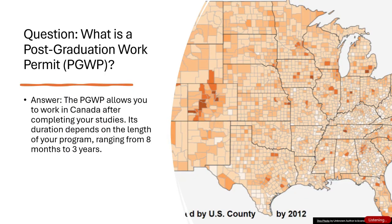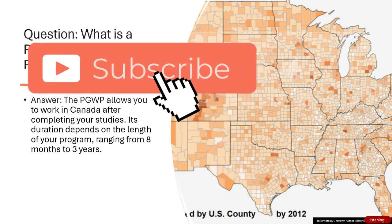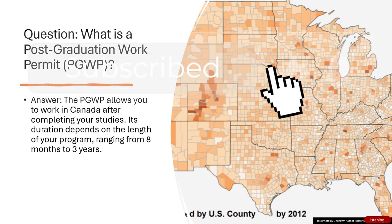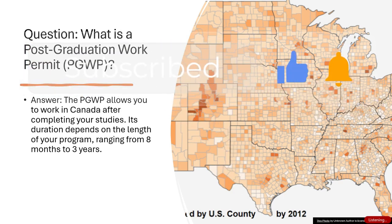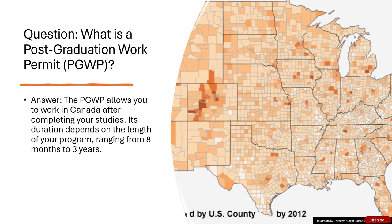Slide 7 — Post Graduation Work Permit Question: What is a Post Graduation Work Permit (PGWP)? Answer: The PGWP allows you to work in Canada after completing your studies. Its duration depends on the length of your program, ranging from 8 months to 3 years.